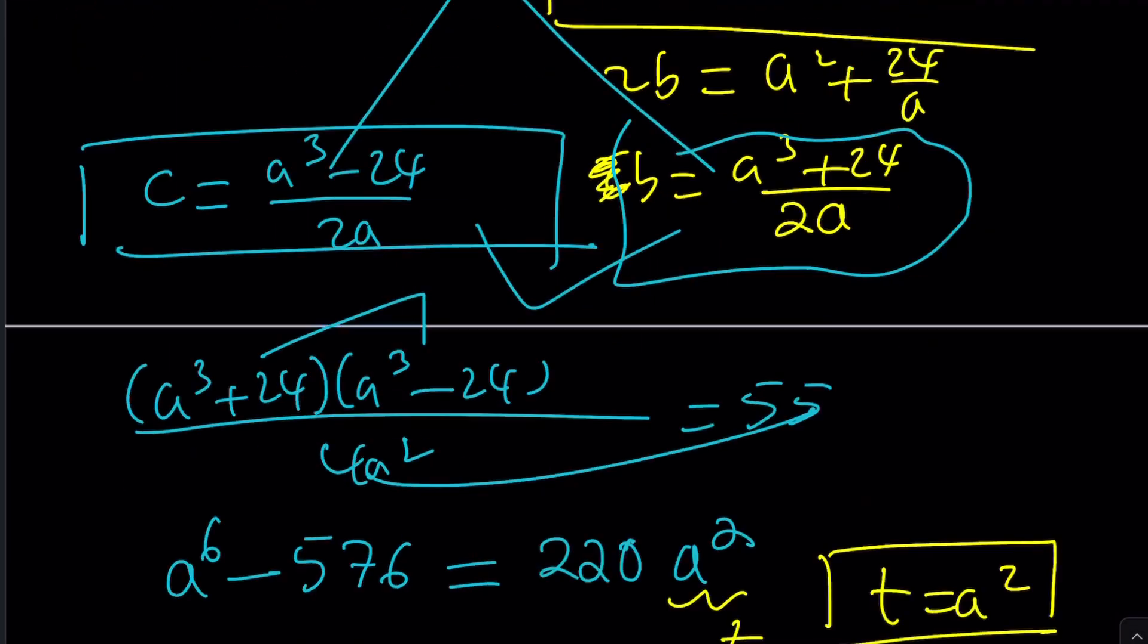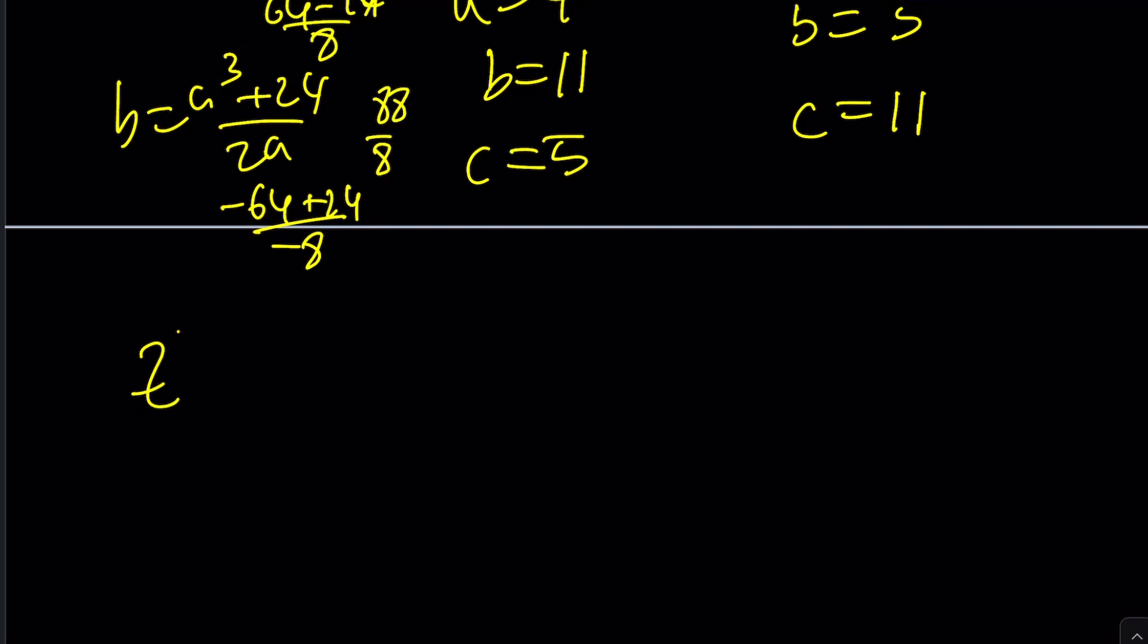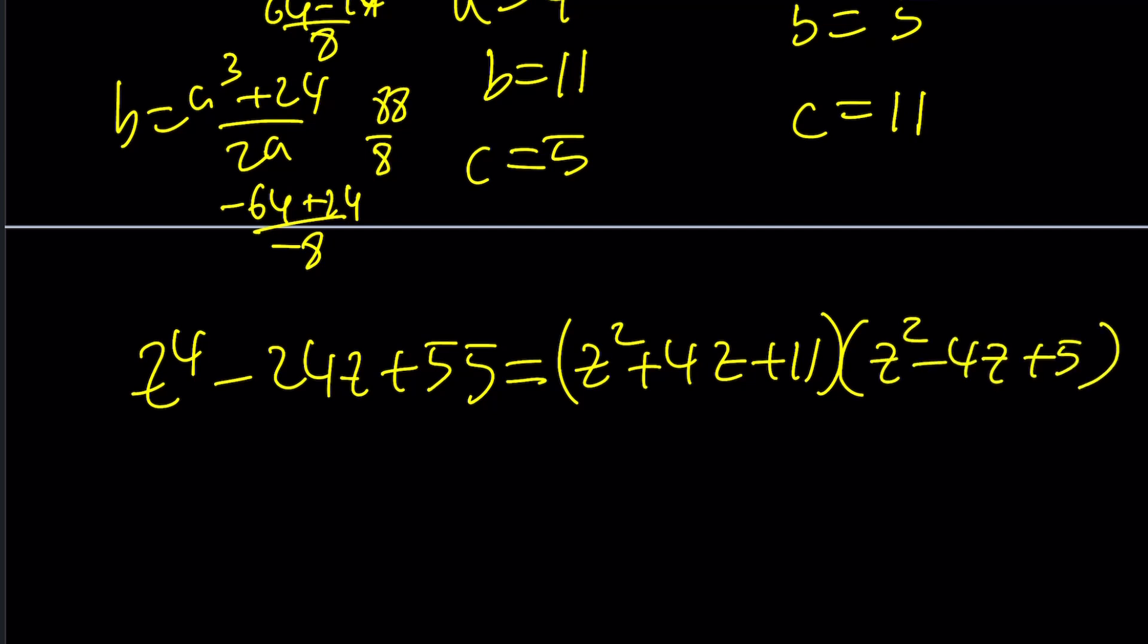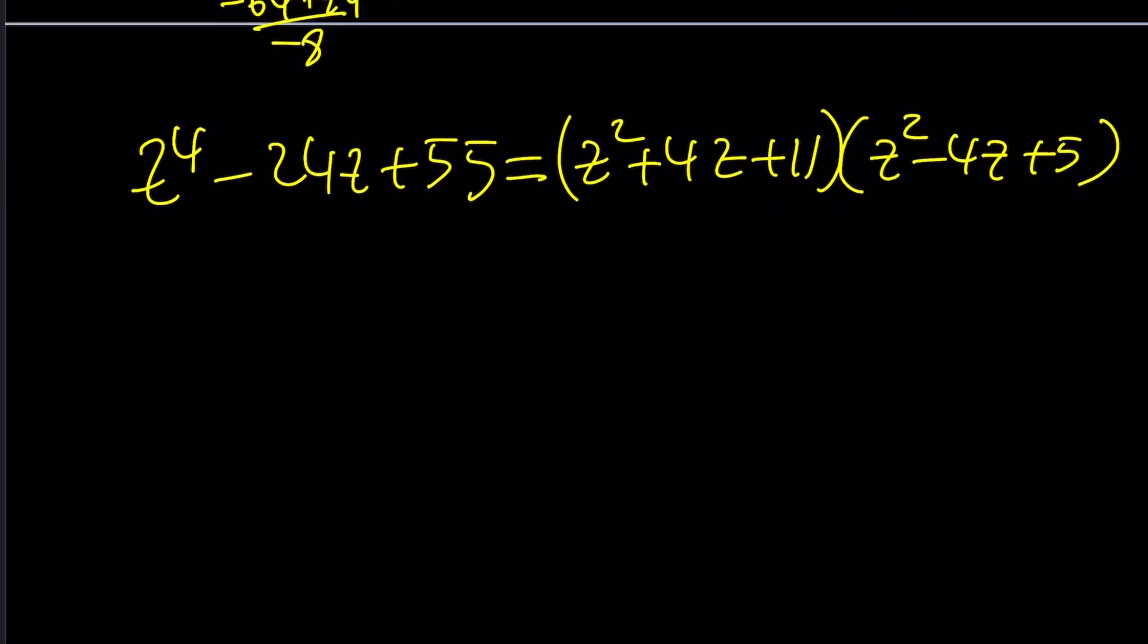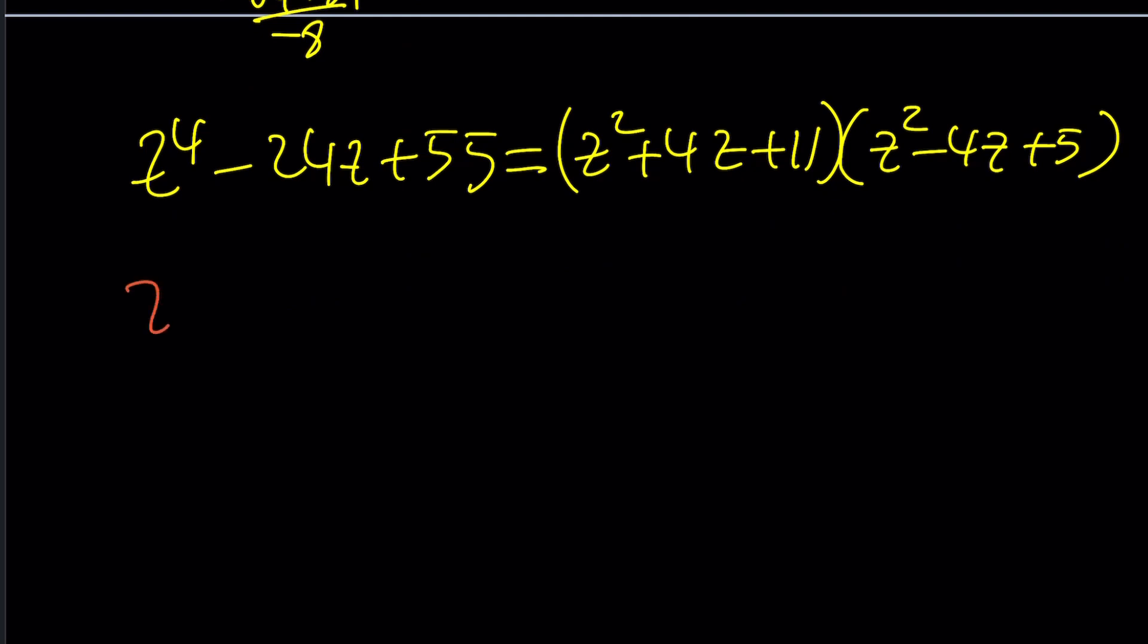So, our equation is z to the fourth minus 24z plus 55. And now, I was able to factor it into z squared plus 4z plus 11 multiplied by z squared minus 4z plus 5. Those are two quadratics, which we can easily solve with the quadratic formula. Now, what happens if you use a negative value? Then the values are going to switch around and you should be getting the same thing. But let's go ahead and solve each of these equations.